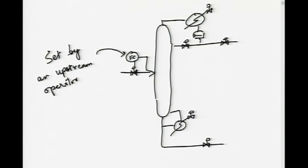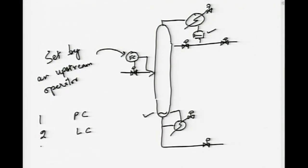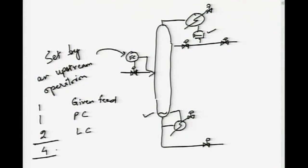So the feed is not in our hands. We have to control two levels — the top level and the bottom sump level. We also have to control the column pressure. Therefore, two valves go for level control, one valve goes for pressure control, and the feed is set from upstream. That leaves us — out of a total of six independent valves, four are taken away. That gives us a degrees of freedom of two.